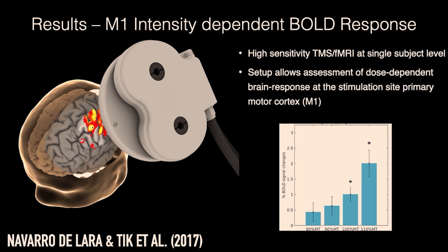What you can see nicely on the motor cortex is, first of all, a strong significant effect at our stimulation target on the left motor cortex. With increasing stimulation intensity there is an increase in BOLD amplitude, and importantly at 100 percent of the motor threshold — the intensity where you see the finger twitch — we get, for the first time, a significant effect. This also works nicely in single subjects with not too much variability.